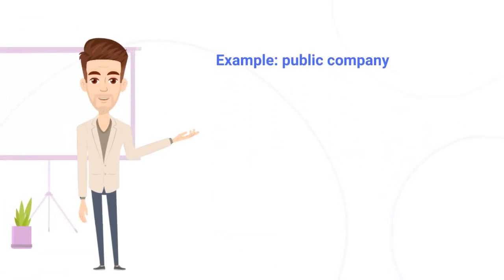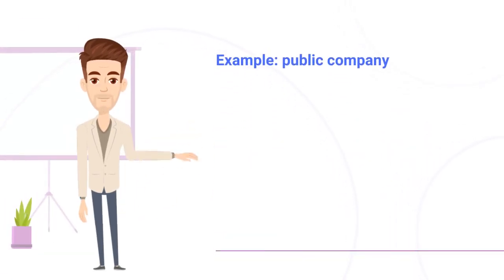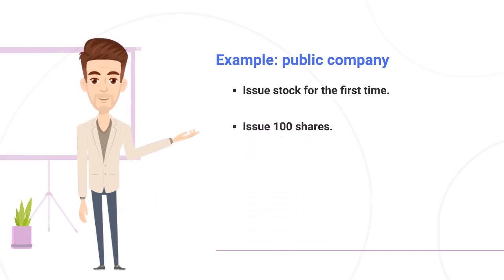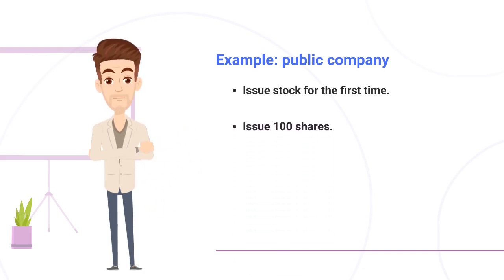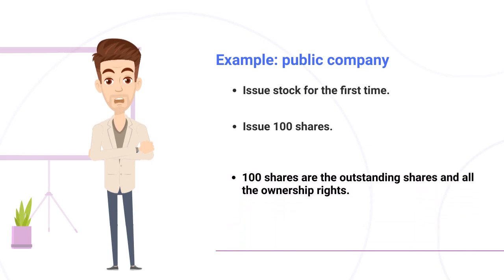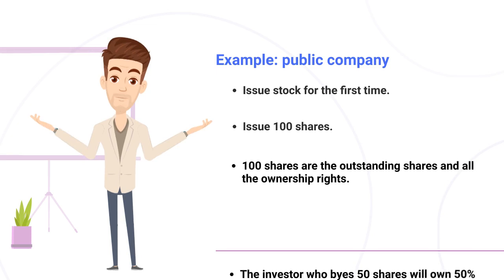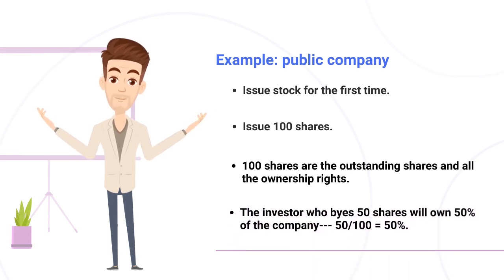Let us take an example. Imagine that a business just became a publicly traded company and will issue stocks for the first time. The company decided to issue 100 shares. These 100 shares are the outstanding shares and represent all the ownership of the company. So if an investor buys 50 shares, then that investor owns 50% of the company.